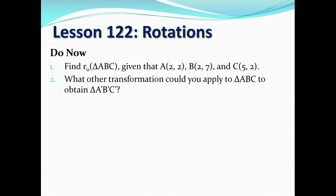For the do-now, we have the following problems. Find the reflection of triangle ABC over the origin, given that point A is (2,2), point B is (2,7), and point C is (5,2). For the second part, what other transformation could you apply to triangle ABC to obtain triangle A prime, B prime, and C prime, which is basically the image of triangle ABC.